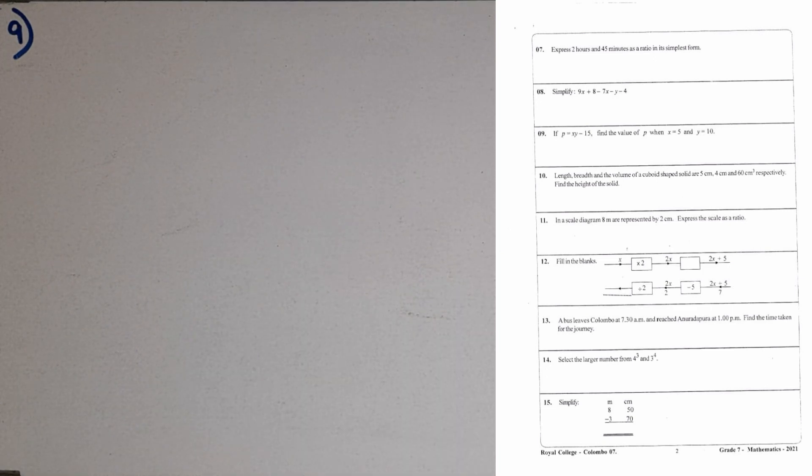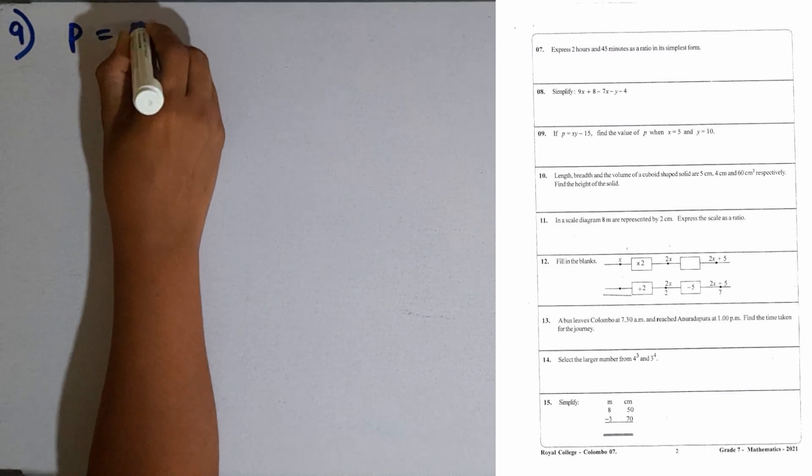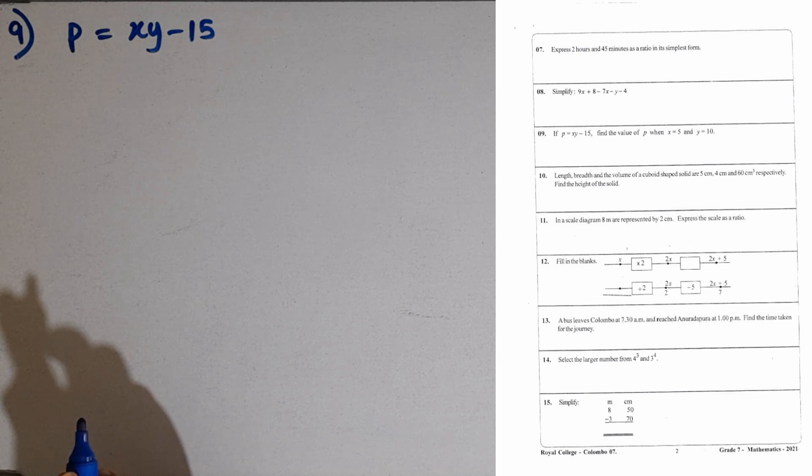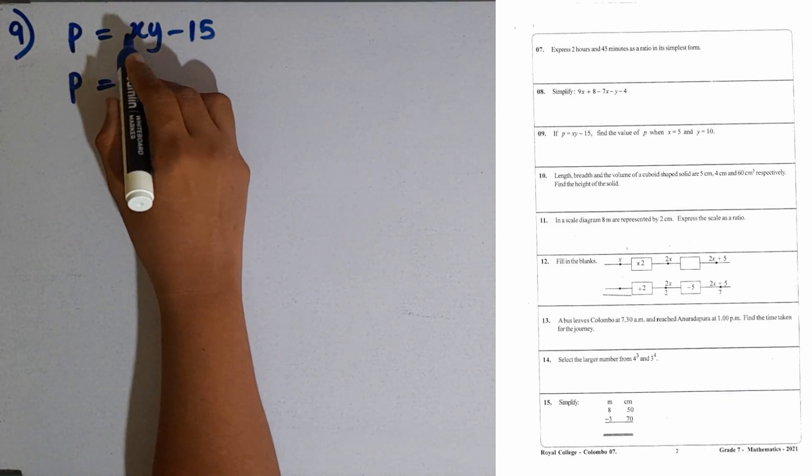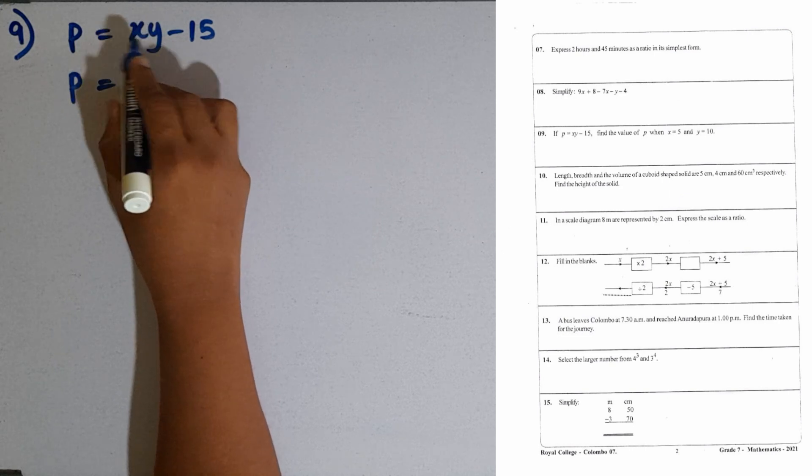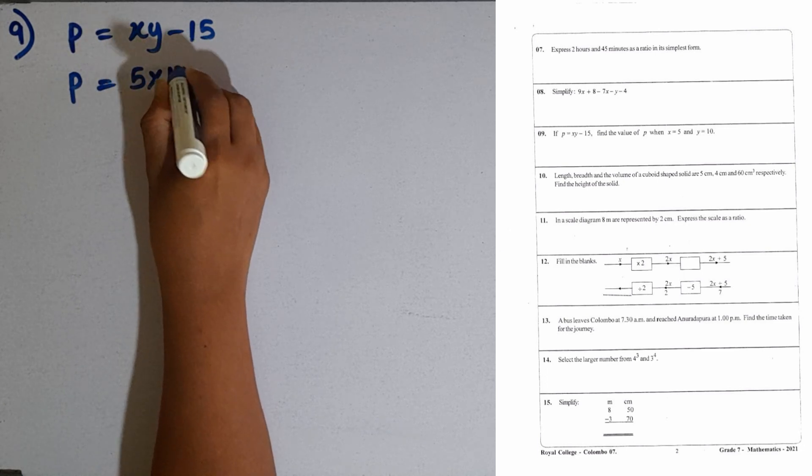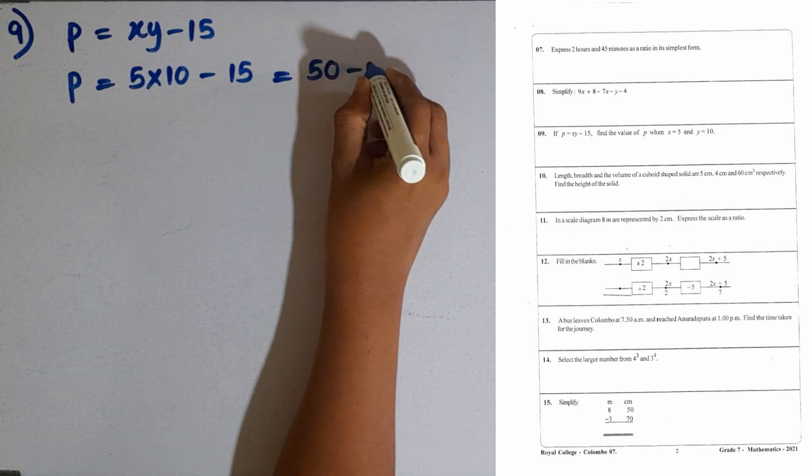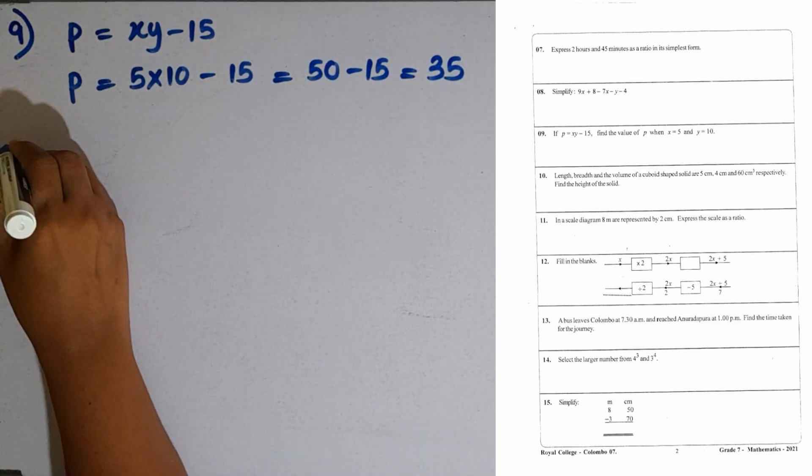Question number 9. If p equals xy minus 15, find the value of p when x equals 5 and y equals 10. We have to substitute 5 for x and 10 for y here. Here, xy means the multiplication of x and y. So, 5 is multiplied by 10 minus 15. So, 50 minus 15. What is the answer? 35. That is the value of p.